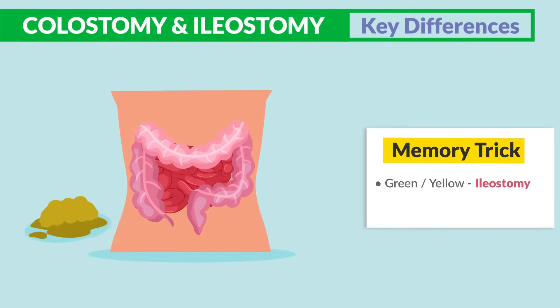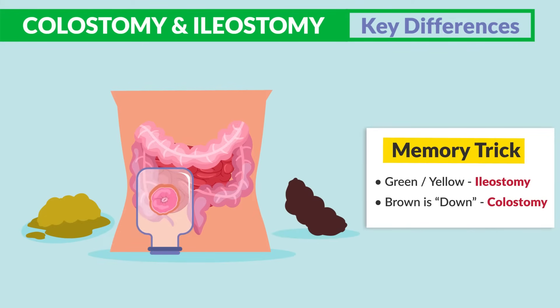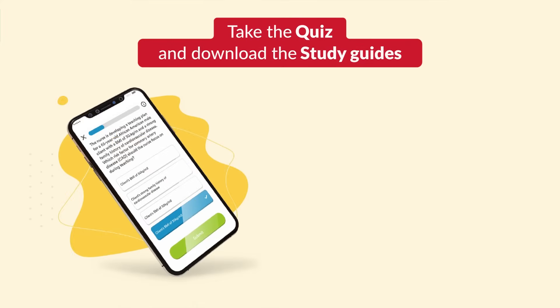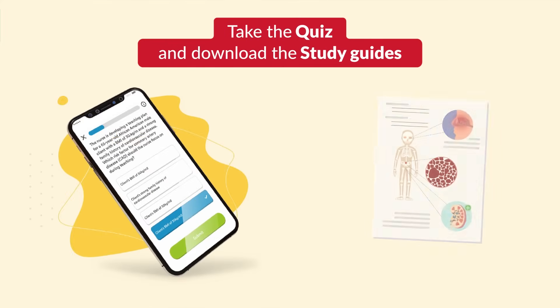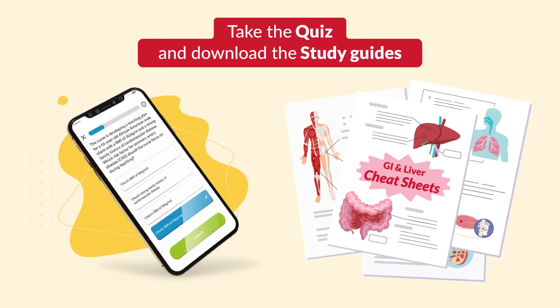The memory trick: green and yellow is for ileostomy, and brown is down for colostomy. Don't forget to take your quiz and download the study guides.